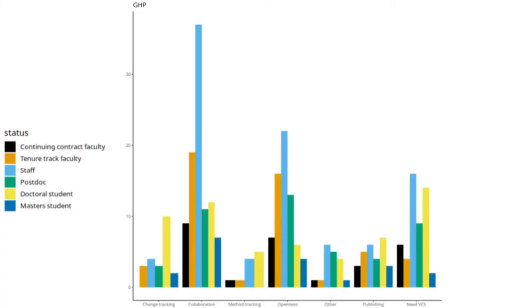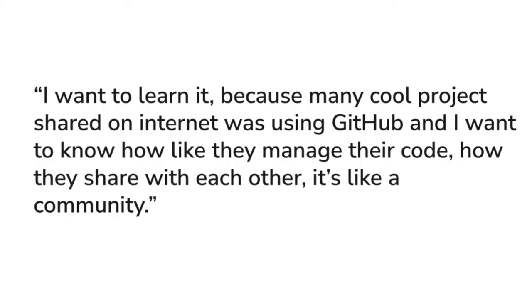Moving to motivations for using Git hosting platforms by institutional status, the motivations include keeping track of changes, collaboration, method tracking in the scientific process, openness and data sharing, and general publishing of content because it allows one's work to be viewable to outside audiences. One participant noted: 'I want to learn Git because many cool projects shared on the internet were using GitHub, and I want to know how they manage their code and share with each other — it's like a community.'